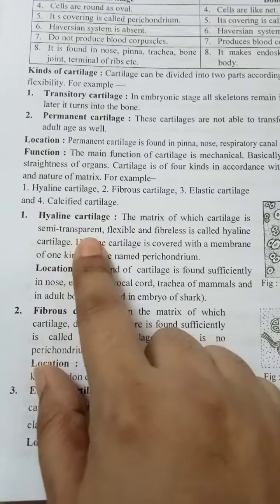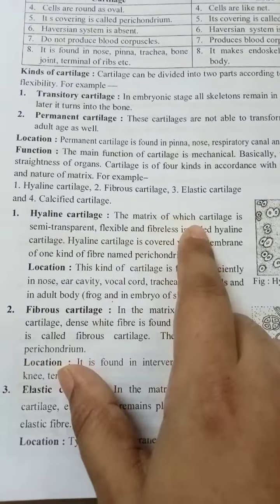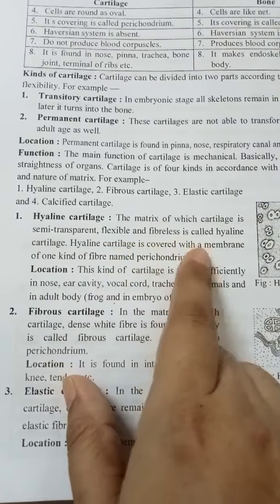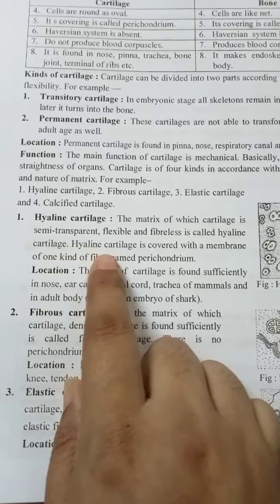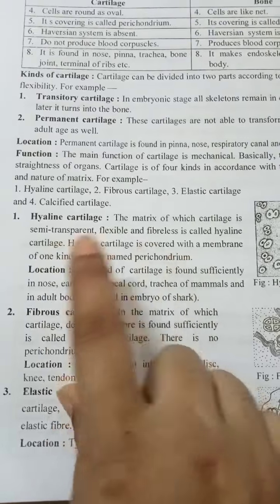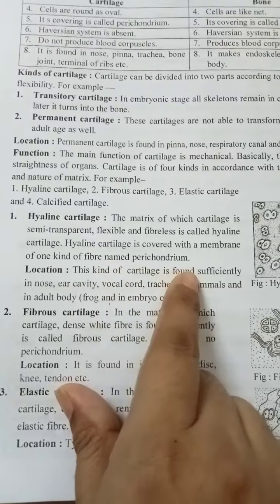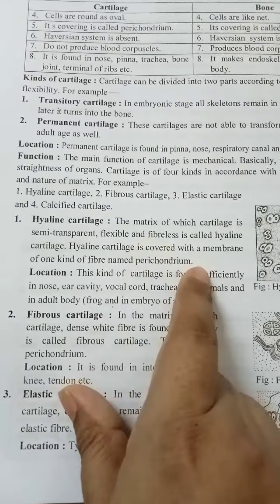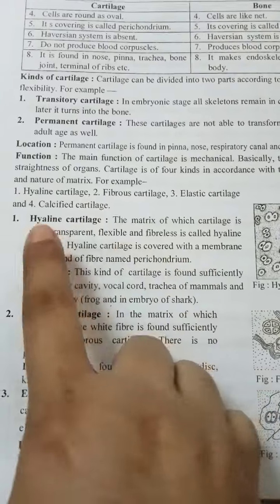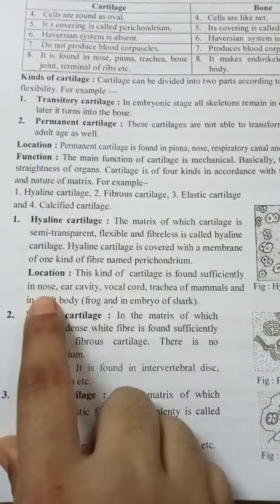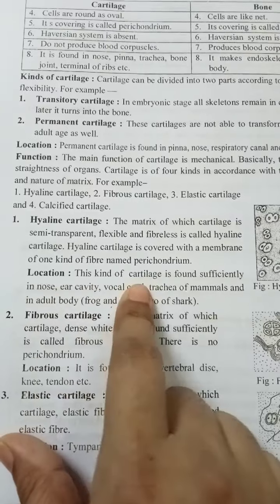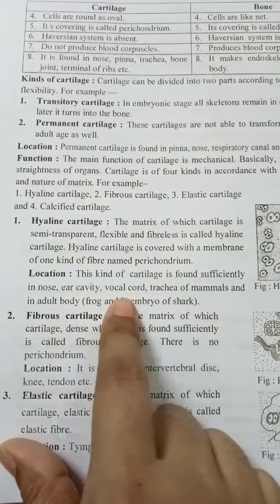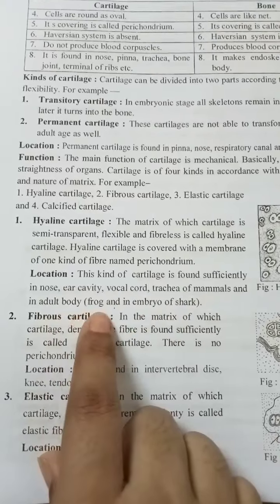Number one: hyaline cartilage. The cartilage whose matrix is semi-transparent, flexible, and fiberless is called hyaline cartilage. It is covered with a membrane called the perichondrium — which is very important to remember. This cartilage is found sufficiently in the nose, ear cavity, vocal cord, and trachea of mammals in the adult body.